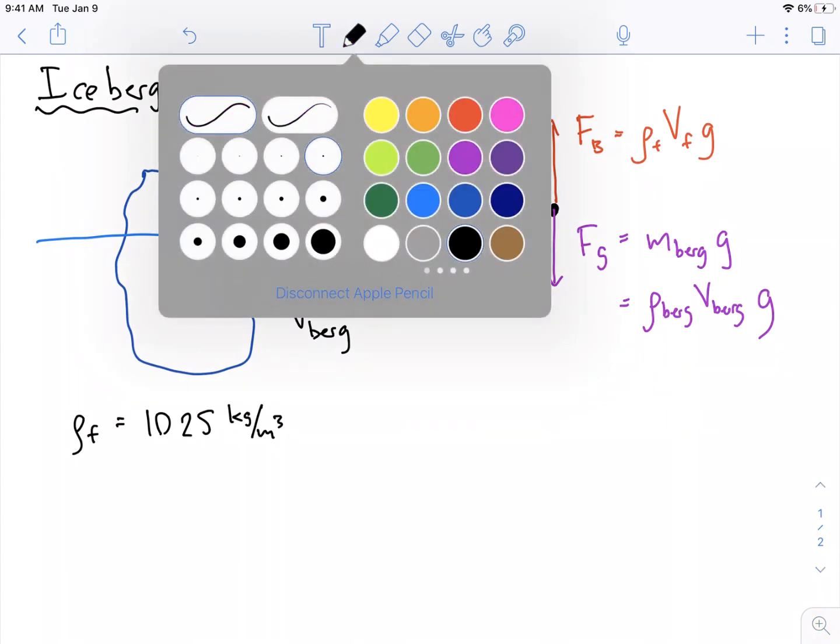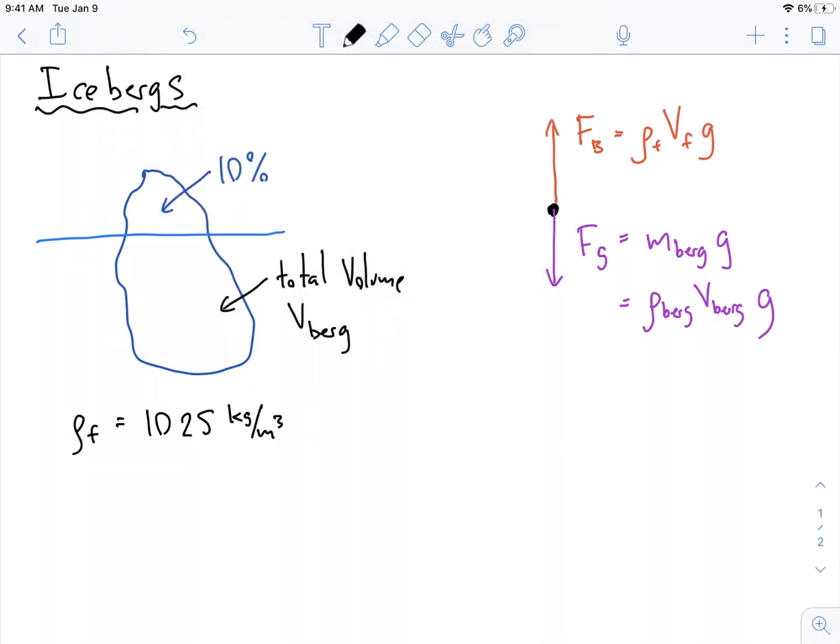Okay, so now that we have this equation written down, we know that in equilibrium the forces are balanced, right. F net is equal to Fb, which is pointing up so I'm going to make it a plus sign, and then minus Fg which is pointing down, and that must be equal to zero.